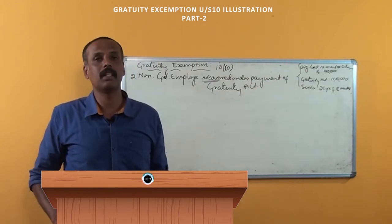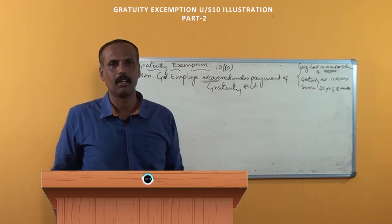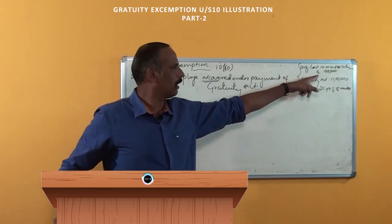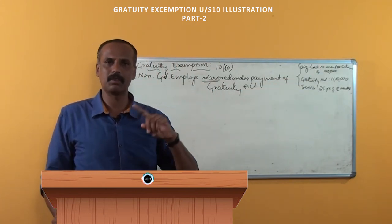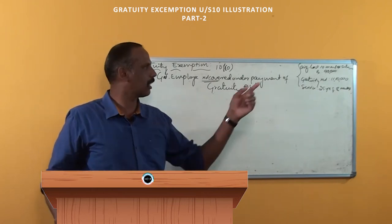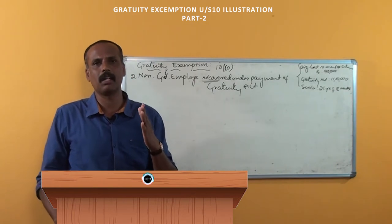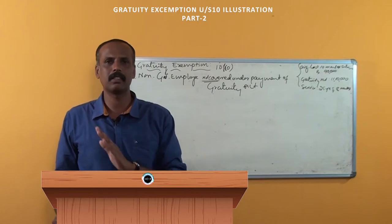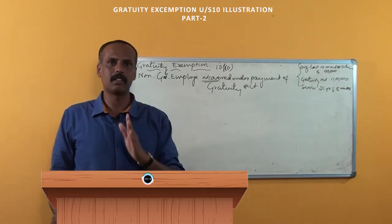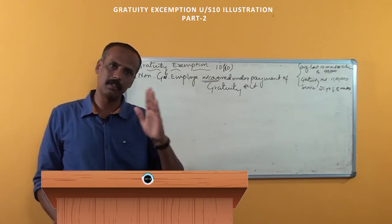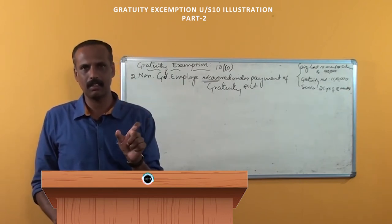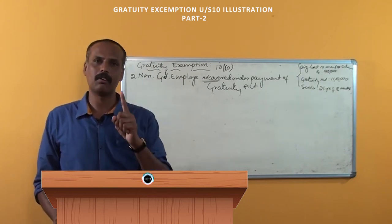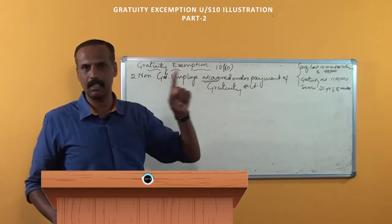For this purpose, we are not taking 15-day salary — we are going to take half-month salary, on the basis of average 10-month salary. In this question, they have clearly given 90,000 rupees as the one-month average salary based on the last 10 months. Usually in questions they may not give this ready-made answer; they will give monthly incomes for January, February, March, etc. The sum of the preceding 10 months' salary should be divided by 10, and we get the average one-month salary. That is the salary for this purpose.